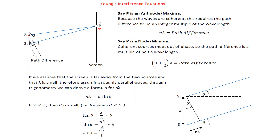If there is a bright fringe — a bright region — it means the path difference should be nλ. But if point P is a dark region, then the path difference will be (n + ½)λ. Now, how can we work out the path difference in terms of length?